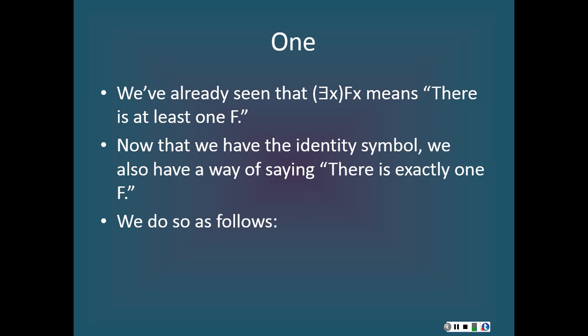Now that we have the identity symbol, we also have a way of saying there is exactly one F. We can say that as follows: there is an x such that x is F, and for any y, if y is F then y is identical to x. A little reflection reveals that this is equivalent to the claim that there is exactly one F, because 'there exists an x such that x is F' tells us there is at least one thing that's F, and the rest says that for anything at all, if that thing is F then it's identical to the one thing we already said is F.